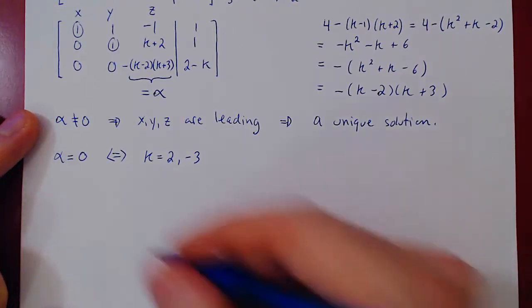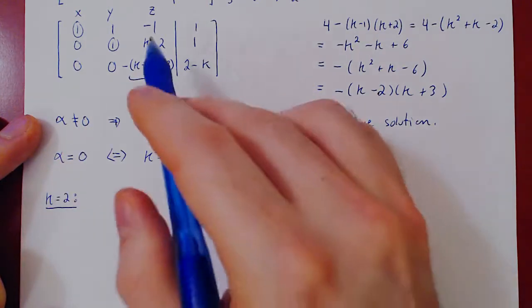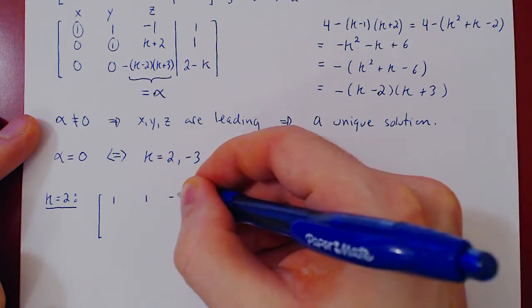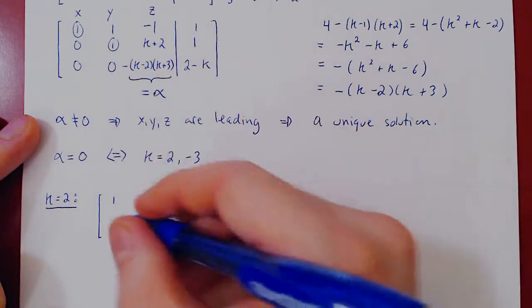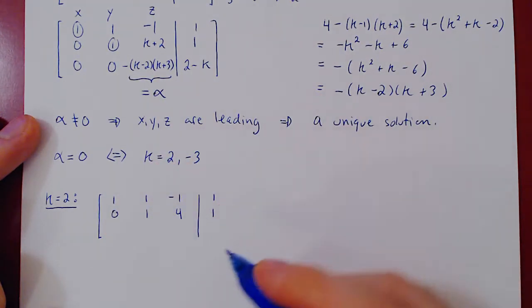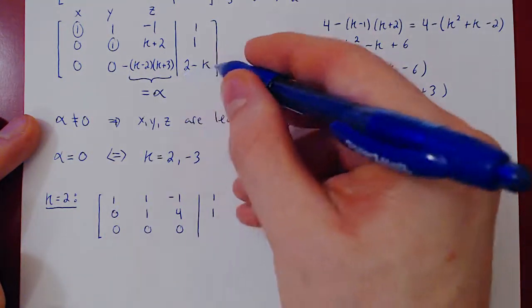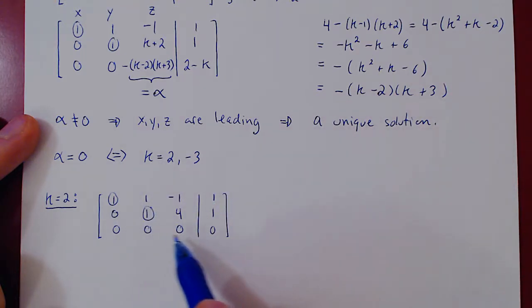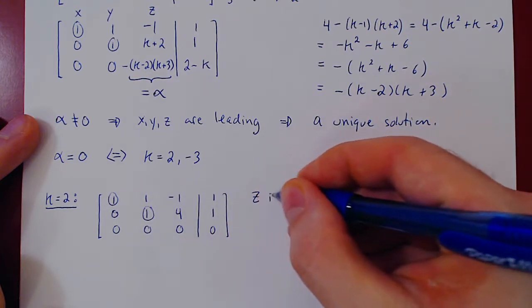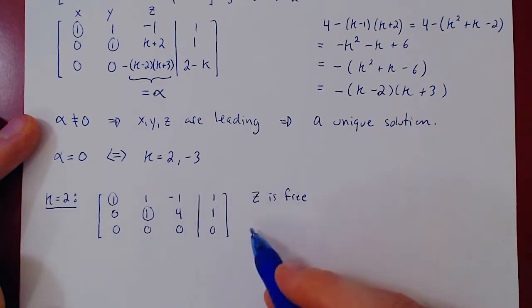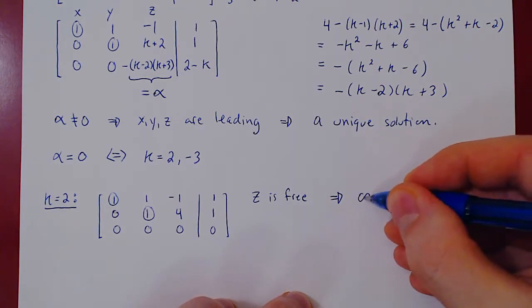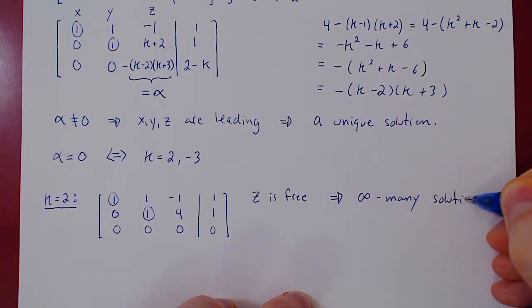So let's check what happens when k equals two. Plug in back in the reduced, or the row echelon form of the matrix, see what we get. The first row stays the same as there is no k. The second row will become zero, one, four, one. And the third row will become zero, zero, zero, and zero. So if you notice, x and y are leading, the bottom row is actually trivial. It says that zero is equal to zero. So the system is consistent, but as z is free, and the linear system is consistent, we have a free variable, it will become a parameter, which implies that we will have an infinite number of solutions. And here I'll be lazy, I'll simply write infinitely many solutions. And that's it. So we figured out that when k equals two, the linear system has infinitely many solutions.